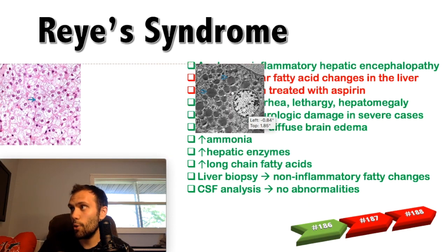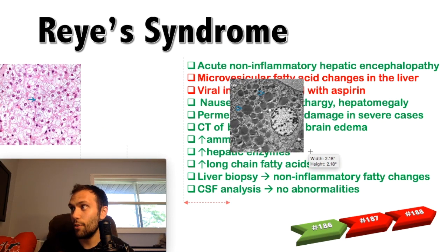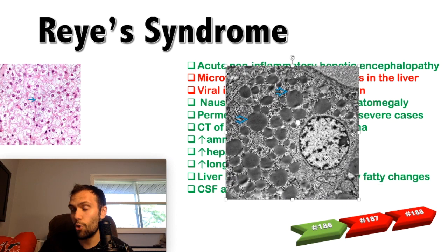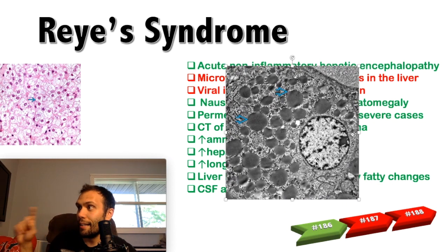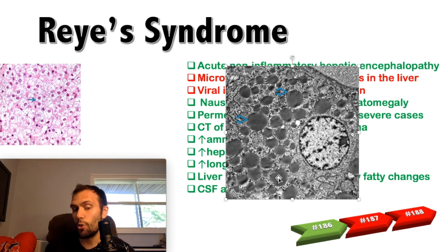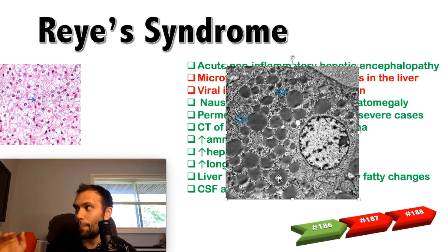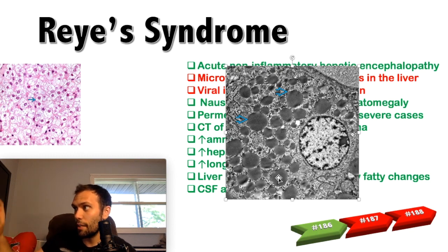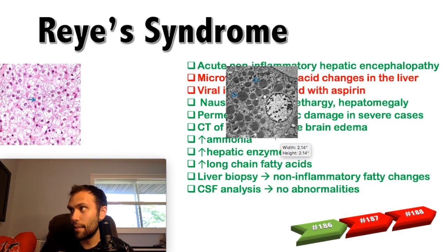On electron microscopy — sometimes seen on Step 1 — you can see numerous dark circles representing lipid droplets within the hepatocyte, again from inhibition of the beta-oxidation pathway resulting in buildup of lipids inside hepatocytes.